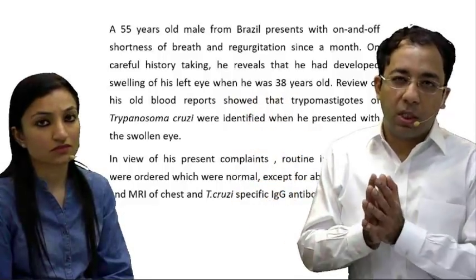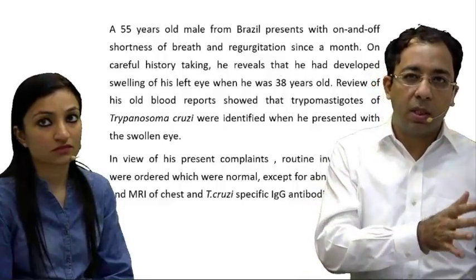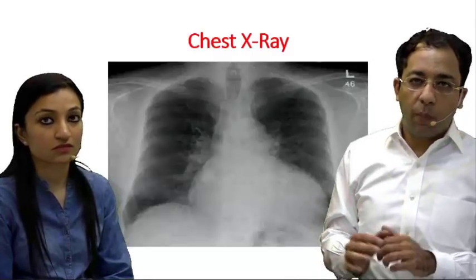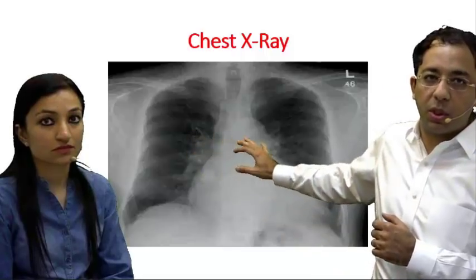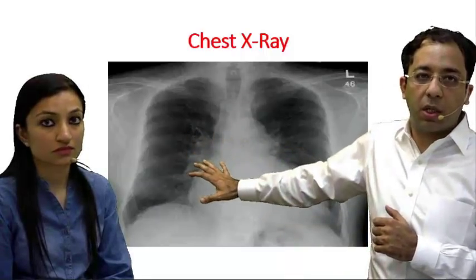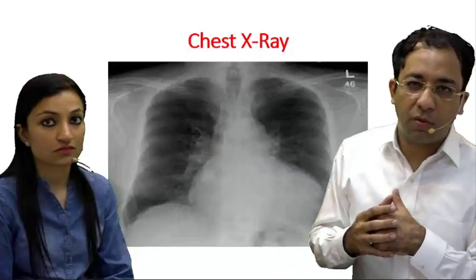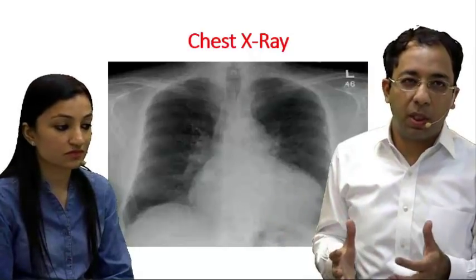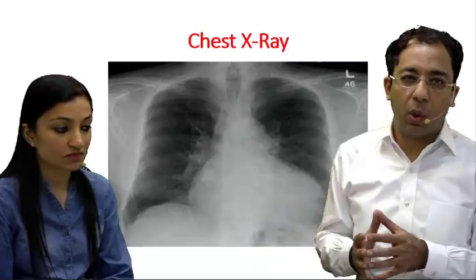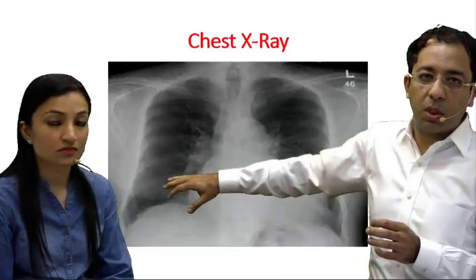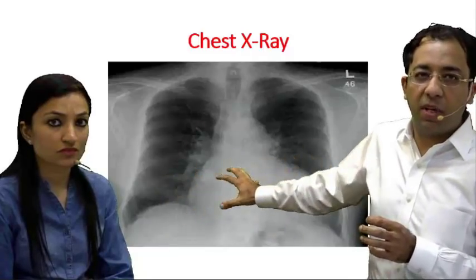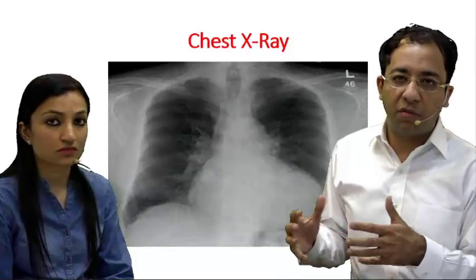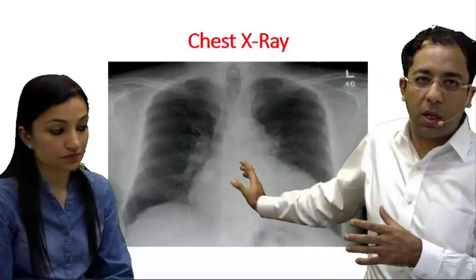The first radiological abnormality we saw was the chest X-ray, which shows a grossly enlarged heart. In the chronic stages of Trypanosoma cruzi infection, also called Chagas disease, you have a dilated cardiomyopathy-like picture showing cardiomegaly on X-ray. For beginners, you need to see the thoracic diameter and estimate if the cardiac diameter occupies more than half of the thoracic diameter — if so, it is enlarged. This is a grossly enlarged heart on chest X-ray.